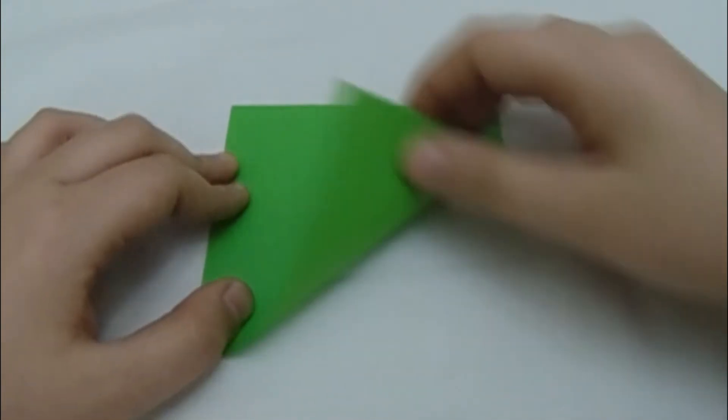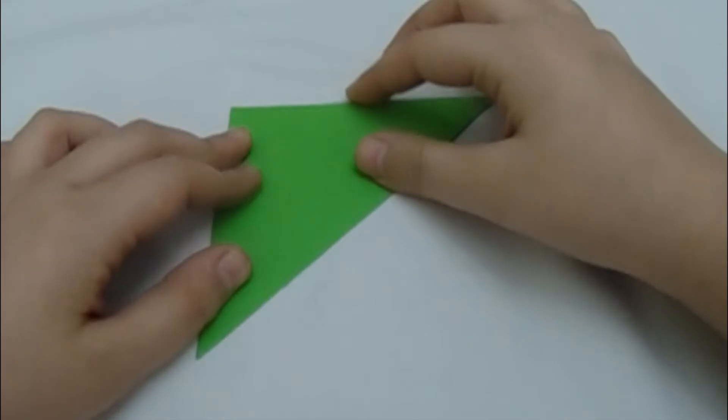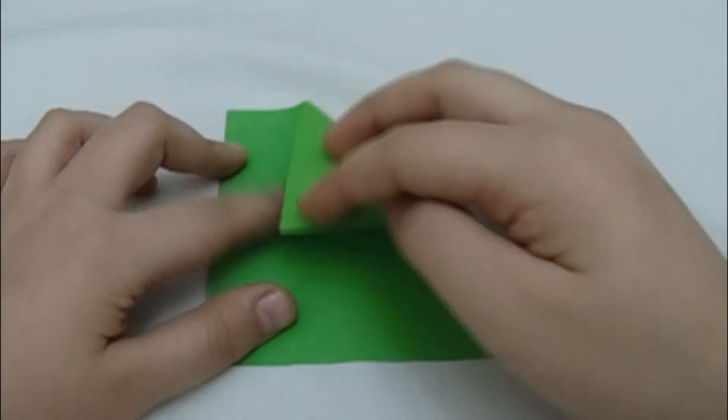So here to start out, fold the paper diagonally in half both ways. Unfold. Fold the paper diagonally in half the other way.